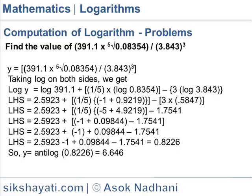So left-hand side equals 2.5923 plus minus 1 plus 0.09844, because minus 5 plus 4.9219 is 0.09844, minus 1.7541. That gives you 2.5923 minus 1 minus 0.09844 minus 1.7541, which equals 0.8226.